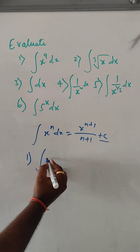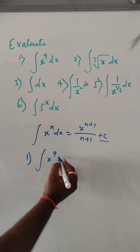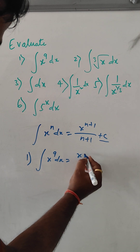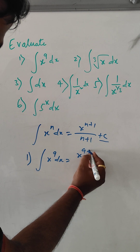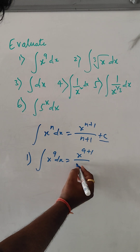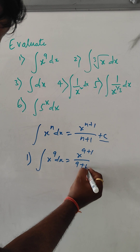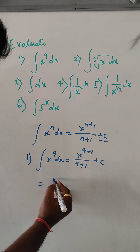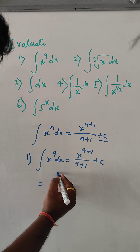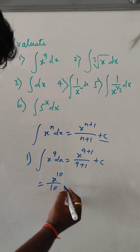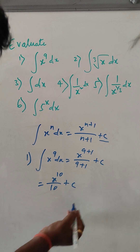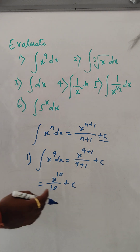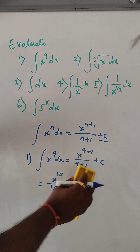Integral of x to the power 9 dx. It will be x to the power 9 plus 1 and here 9 plus 1 plus c. So the answer is x to the power 10 by 10 plus c. This is the solution for the first problem.